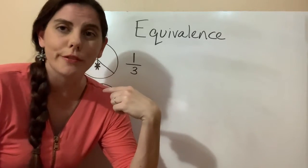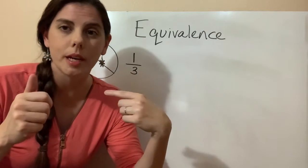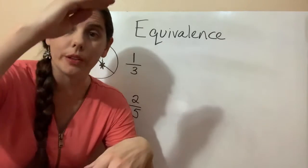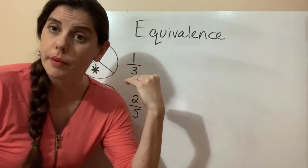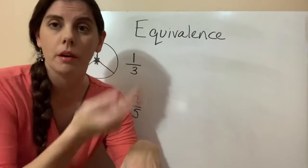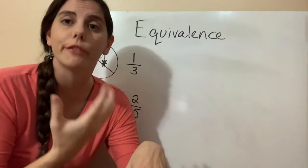To create equivalent fractions, we're going to use the same concept. Whatever we do to the bottom, we do to the top. So if we multiply by a certain number on the bottom, then we multiply by that same number on the top. And that will give us an equivalent fraction.